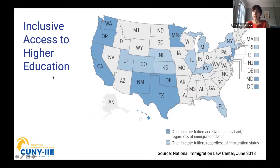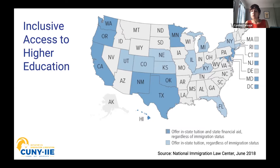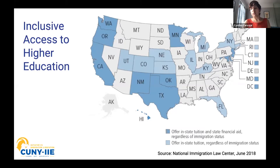Looking at what inclusive access to higher education looks like across the United States: states in dark blue offer in-state tuition and state financial aid regardless of immigration status. States in light blue only offer in-state tuition. The difference is that undocumented students don't have access to FAFSA or any federal financial aid, so it's really up to the state to create policy for in-state tuition and state financial aid. This chart was updated in 2018, but as of September of last year, New York would be dark blue because they just started providing in-state tuition and in-state financial aid for undocumented students.